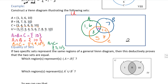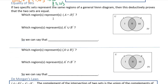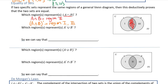Next we look at the equality of sets. Two sets are equal if they represent the same regions in the Venn diagram. I'll do set operations to prove this. First, A intersect B is region 2 — the overlapping part. Then (A intersect B)' — the complement — is all other regions: 1, 3, and 4.